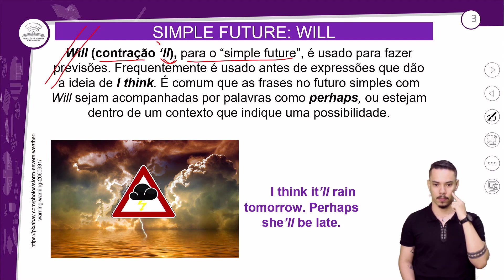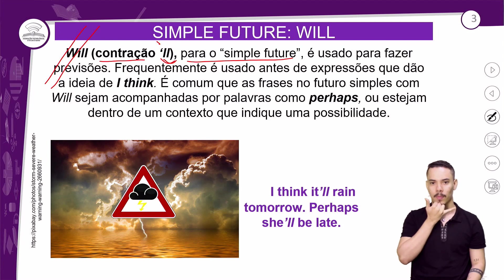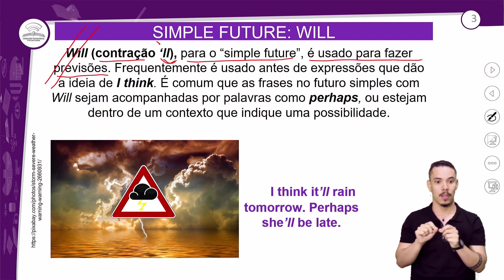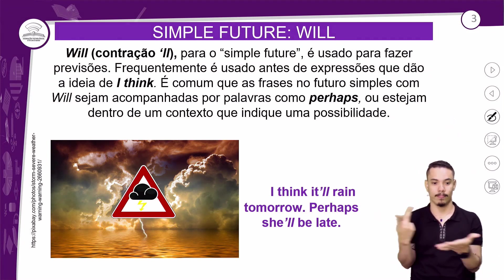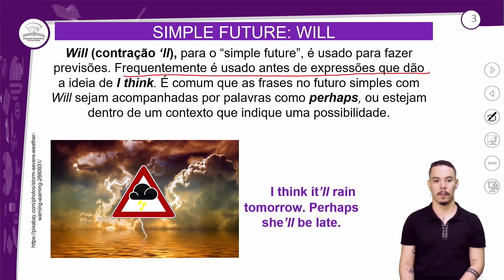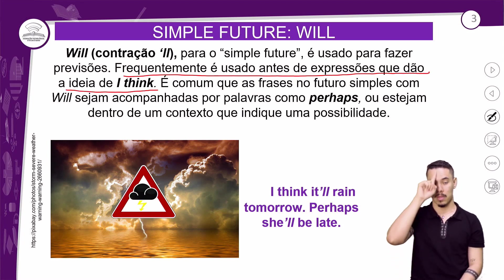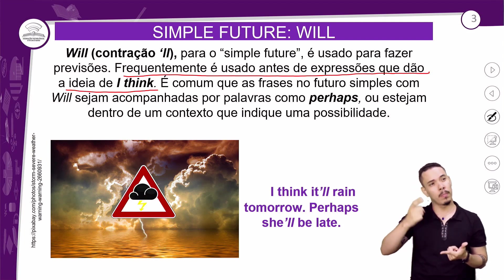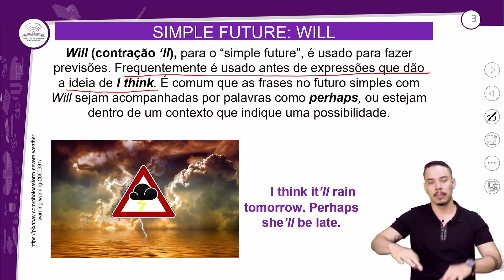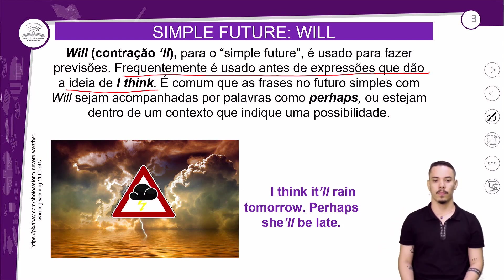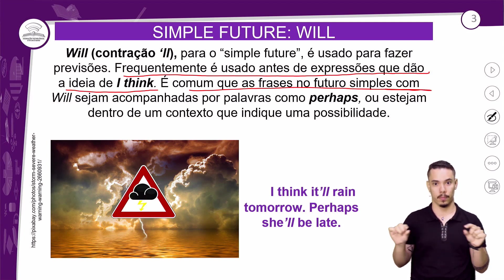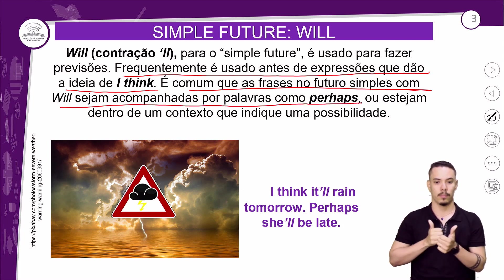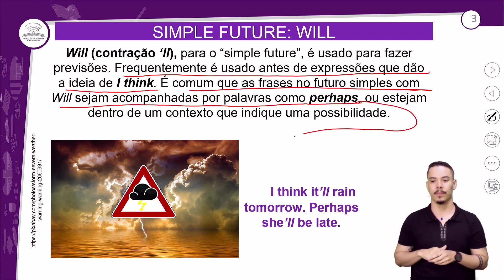For the Simple Future, which is the futuro simples, it is used to make predictions. It is frequently used before expressions that convey the idea of 'I think' — meaning 'eu acho,' 'eu penso.' It is also common for sentences in the simple future with 'will' to be accompanied by words like 'perhaps,' which means 'talvez.'